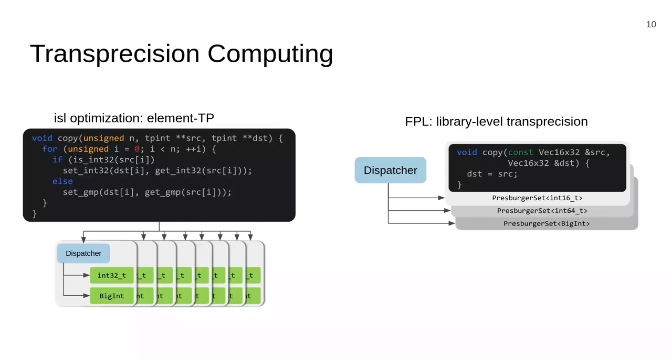So in this example, suppose we are dispatched to the 16-bit version of the library, we would then know that all integers used here are 16-bit integers. And therefore, we can actually vectorize the constraint copy.